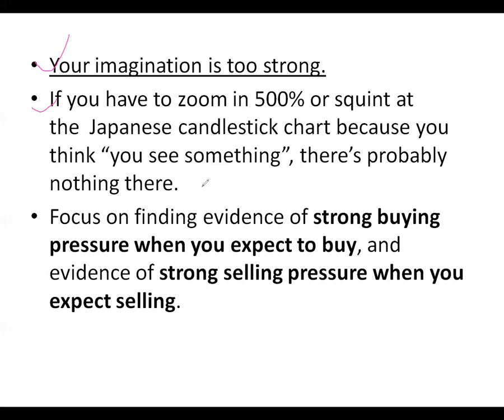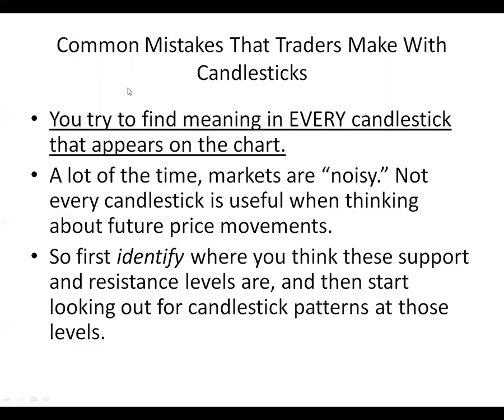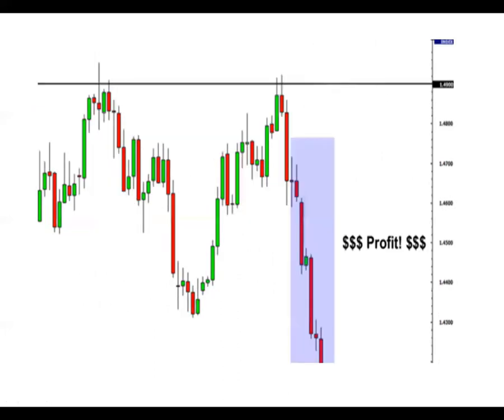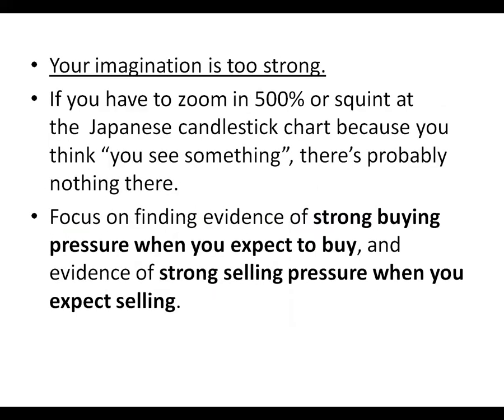If things will line up the right way, it shouldn't be difficult to spot — it should be easy. The next thing: focus on finding evidence of strong buying pressure when you expect to buy, and evidence of strong selling pressure when you expect to sell — just like the example I showed you. There was a strong selling pressure, we saw it, and then we decided to go for it. Expect a strong selling or buying pressure, and once you see that evidence, you are good to go.